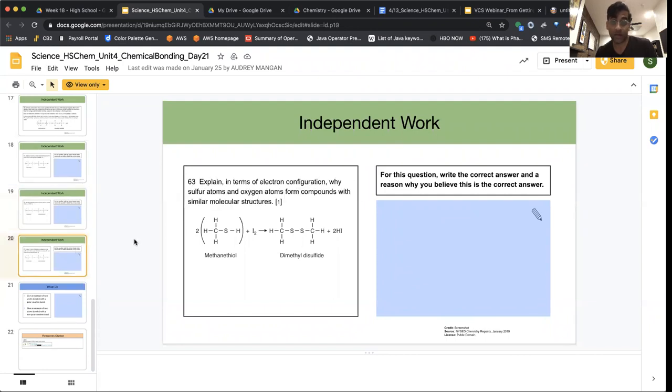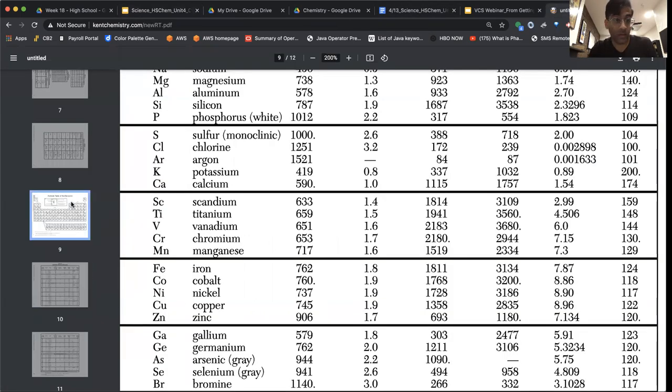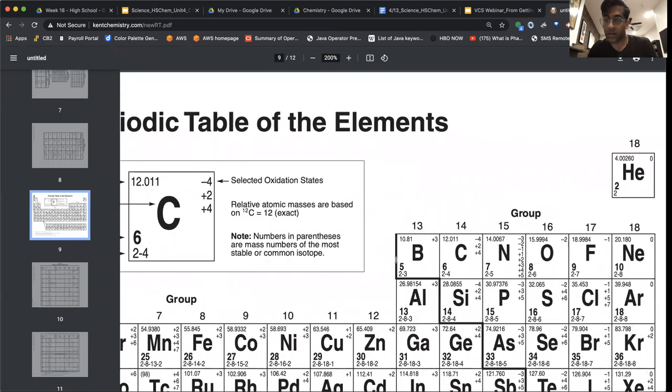Final thing, explain in terms of electron configuration why sulfur atoms and oxygen atoms form compounds with similar molecular structures. We could build a similar molecular structure to this dimethyl disulfide between carbon, hydrogen, and oxygen as well. That's what they're saying there. Again, we want to look at the periodic table and note that if we go over to group 16, oxygen and sulfur are in the same family. What does that mean? Well, it means something about their electron configuration. We see 2-6 for oxygen. We see 2-8-6 for sulfur. And I hope that is enough to get you going.